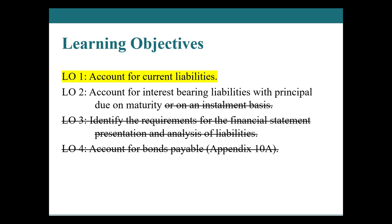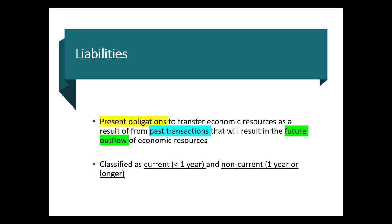Let's look at this in a financial context, which honestly isn't that much different from that friend. Think of this as past, present, future — this definition will come up about 50 times if you take IFA Two. A liability must meet all three criteria: it must be representative of a past transaction that represents a present obligation to transfer economic resources that you can't get out of, and that will result in the future outflow of economic resources.